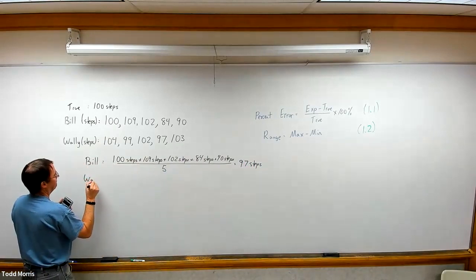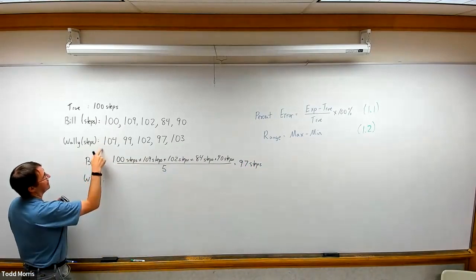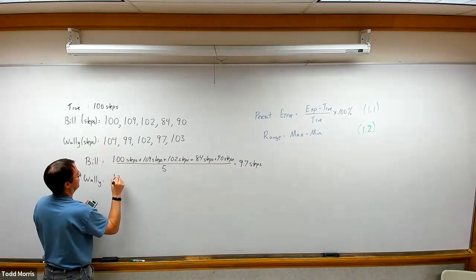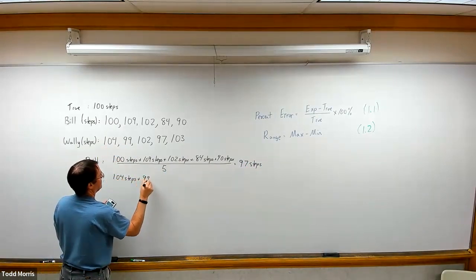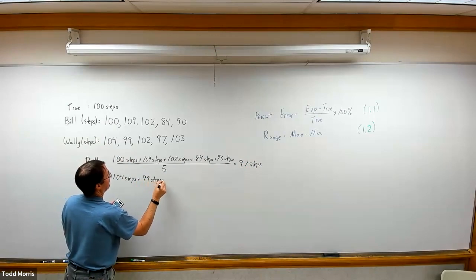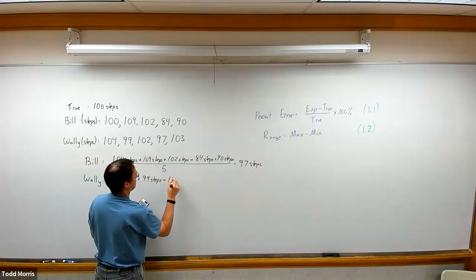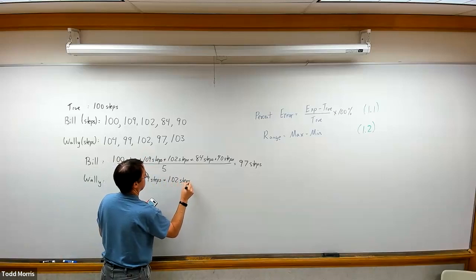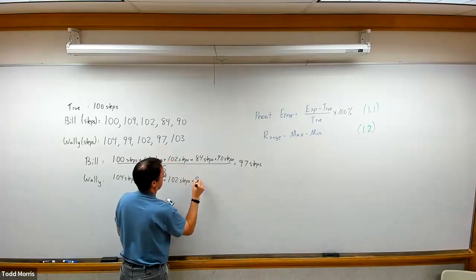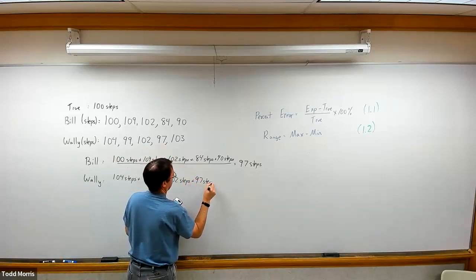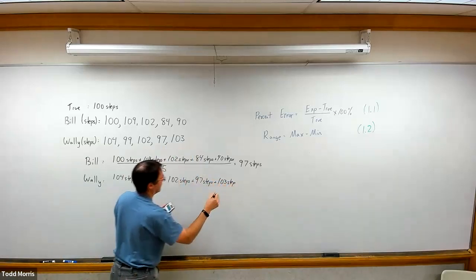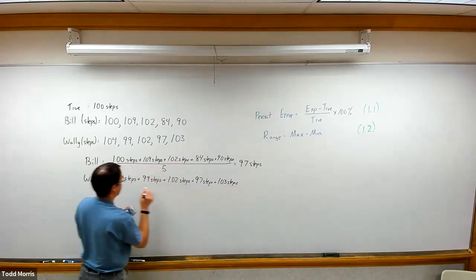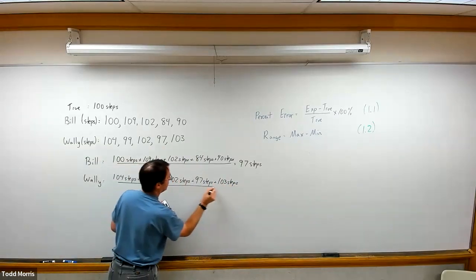So on average, even though Bill actually walked 100 steps, his fitness tracker on average said he only walked 97 steps. Same idea with Wally. We're going to take his individual measurements. 104 steps, plus 99 steps, plus 102 steps, plus 97 steps, plus finally 103 steps.